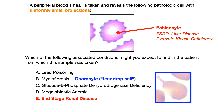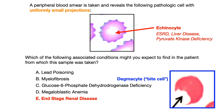Choice C, glucose-6-phosphate dehydrogenase deficiency, is associated with a degma site. Degma sites are sometimes called bite cells, and as you see in the image in the bottom right-hand corner of the slide, they quite literally look like somebody took a bite right out of a red blood cell. If you see a bite cell, you want to associate that with G6PD deficiency — that's an incredibly high-yield association. If you knew that G6PD deficiency is associated with bite cells, you could have eliminated choice C.